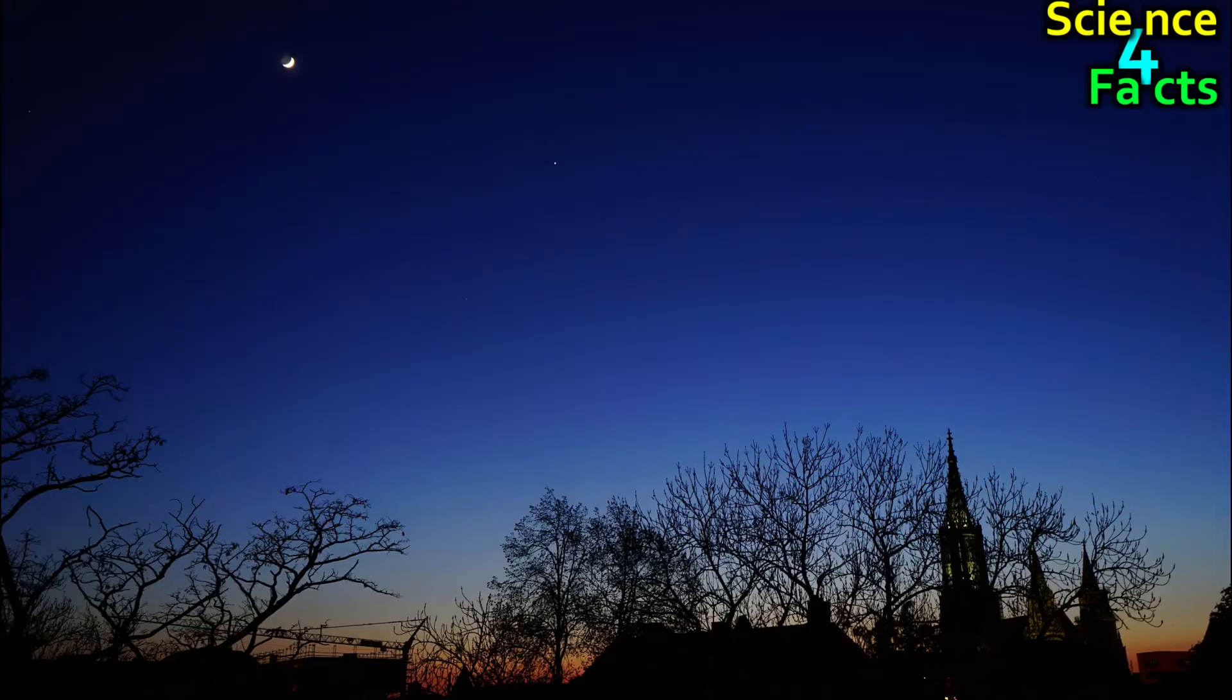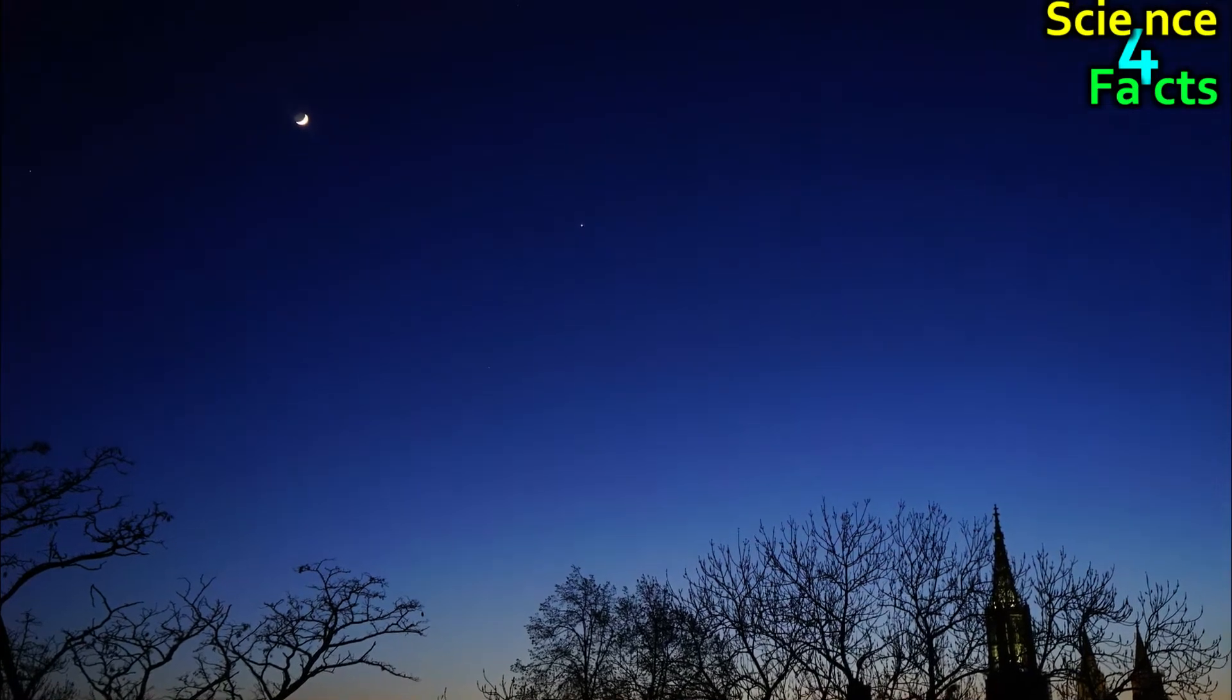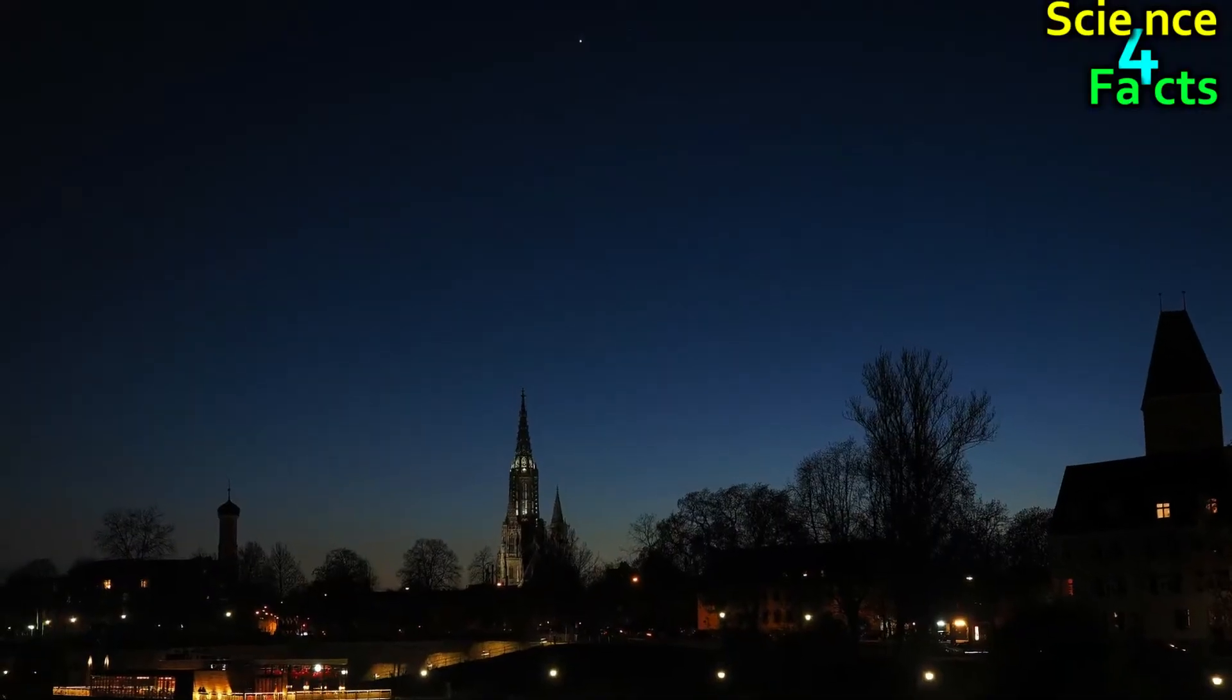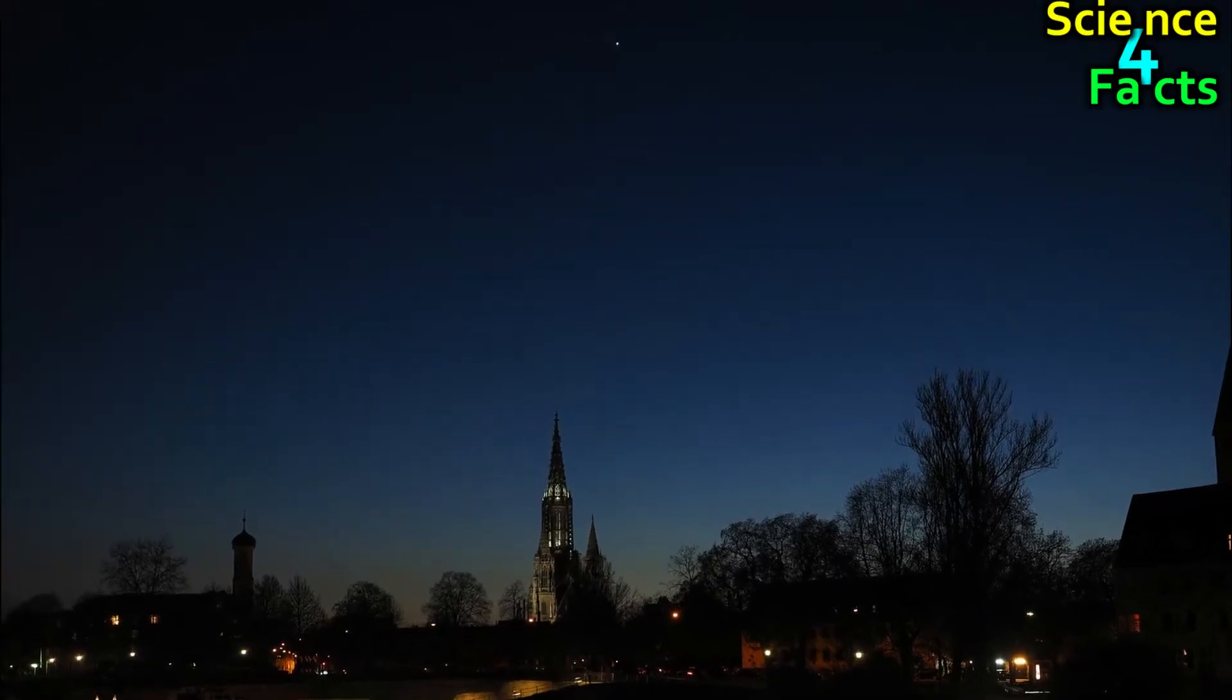Just before sunrise or for a few hours after sunset, Venus is visible to the naked eye. Sometimes you can see Venus even in a completely dark sky.